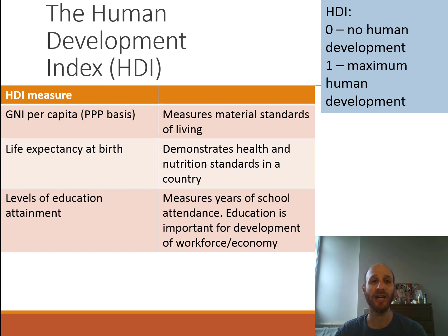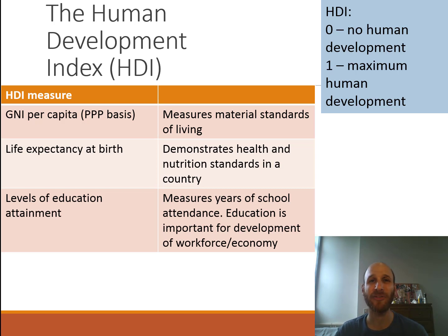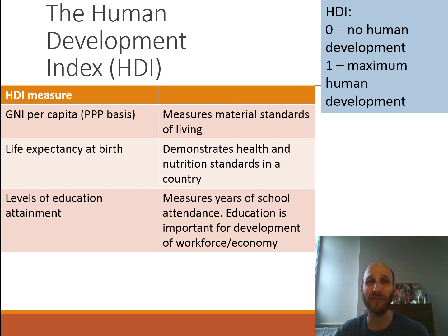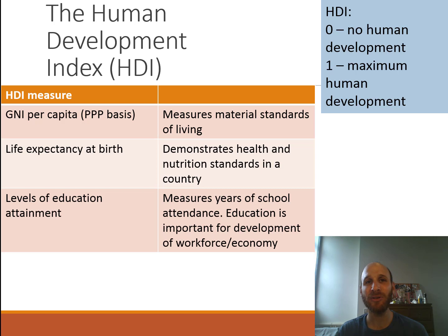The second part of the HDI is life expectancy at birth — how long are people expected to live? This demonstrates health and nutrition standards in a country, shows us the quality of health care, and how healthy people are in terms of their lives in that country.